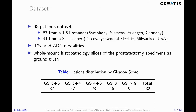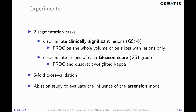Our model was trained and validated on a heterogeneous dataset of 98 patients scheduled to undergo radical prostatectomy, corresponding to 132 lesions of the five Gleason score groups. Performance of Prostate Attention Net was evaluated on two tasks: the first evaluates its ability to discriminate clinically significant cancer from non-cancer lesions or normal tissue, and the second evaluates its ability to discriminate lesions of each Gleason score group.